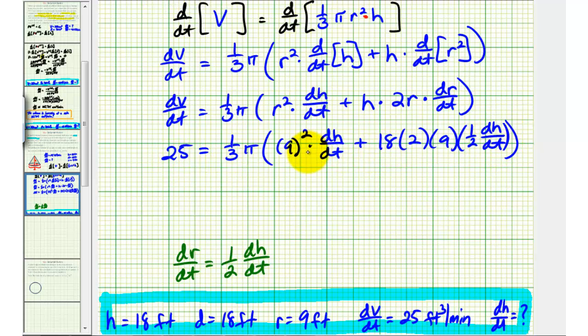The reason this is so helpful is now we only have one unknown in our equation, which is dh/dt. So now we'll solve this for dh/dt, in order to determine the rate of change of the height with respect to time. So we'll have 25 equals one-third pi times the quantity, this will be 81 dh/dt.